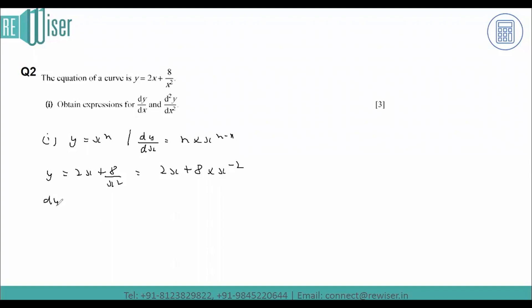If I'm now finding the derivative, I'll use my power rule. That equals 2 plus 8 times minus 2 times x to the power minus 2. If I rewrite this again, I get 2 minus 16 over x cubed.